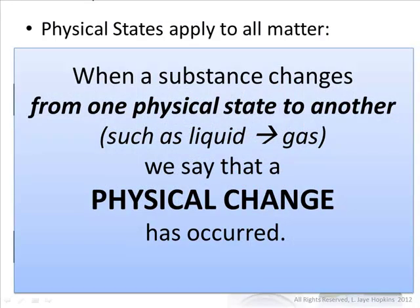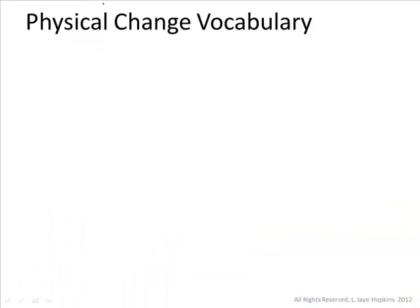When a substance changes from one physical state to another — for instance, if I have liquid water and heat it up until it becomes a gas — we say that a physical change has occurred, because all we did is physically change that substance from one state to another. We haven't changed the chemicals involved. H2O when it's a liquid is still H2O when it's a gas. We've just changed how the molecules are behaving. Physical changes refer to changing a substance from a solid to a liquid, a liquid to a gas, or in any other direction or combination. Let's briefly talk about some of the vocabulary you're likely to hear when people talk about physical change.